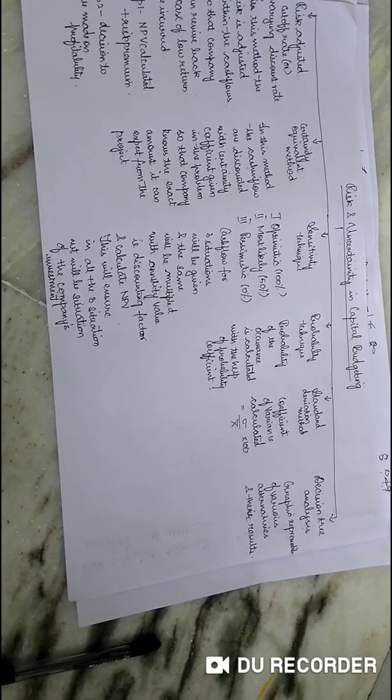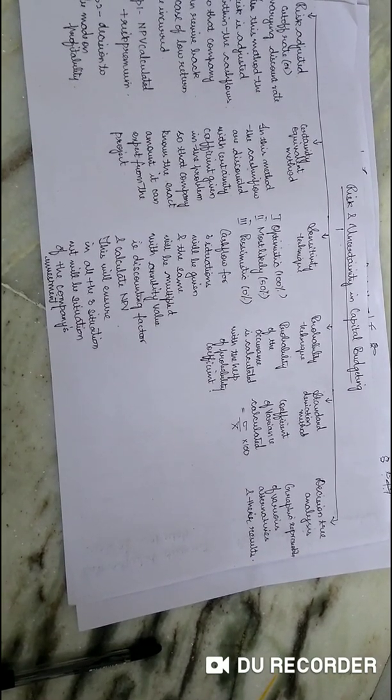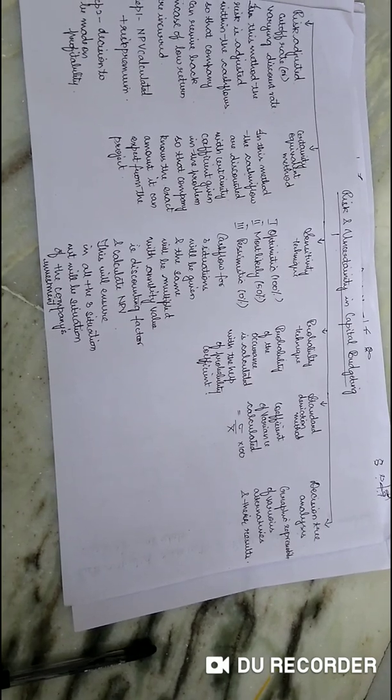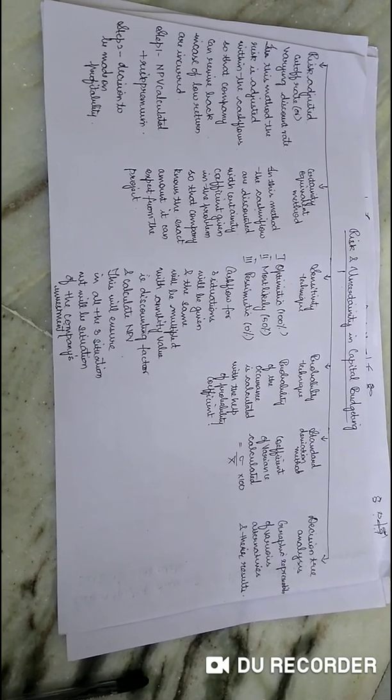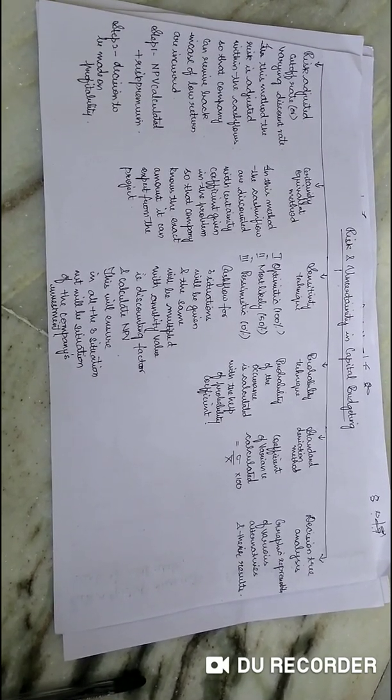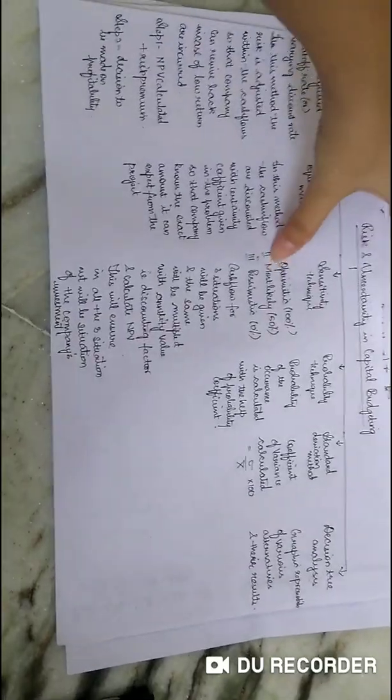Hello everyone, so today we'll be dealing with the second part of unit 2, in which we'll be learning about risk and uncertainty in capital budgeting. You have totally six methods in it, so every day we'll be taking up one each so that it will be convenient for all of you to understand.